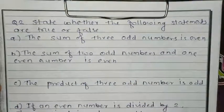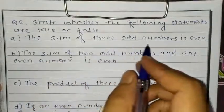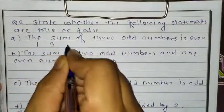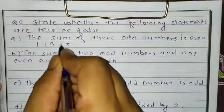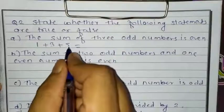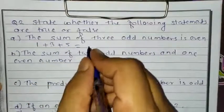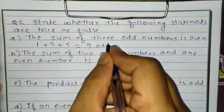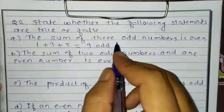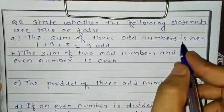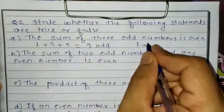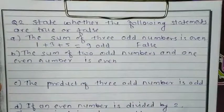As you already know what an odd number is and what an even number is. So for the sum of 3 odd numbers, I am taking simple numbers like 1, 3, and 5. Sum means addition. Now do the calculation: 5 plus 3 is 8, 8 plus 1 is 9. The answer is coming as an odd number. But here the statement says the sum of 3 odd numbers is even. We are getting an odd result, so it is false. First answer is false.